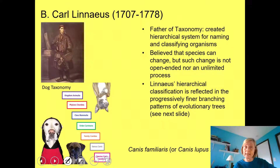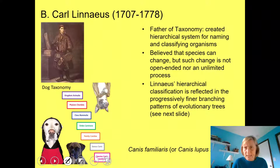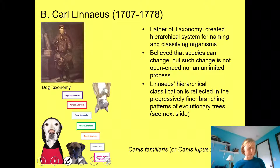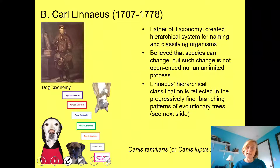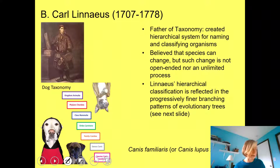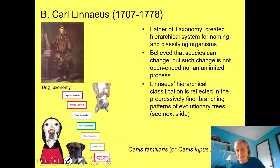Into this world came Carl Linnaeus, living in the 1700s. We call him the father of taxonomy — he came up with a naming system and organizational system that classifies all organisms in the world. At first, Linnaeus believed that species are fixed and unchanging, much like the natural theologian worldview. But after studying plant hybridization, he modified his beliefs, saying it looks like species can change, but change is not open-ended or unlimited — it's small.